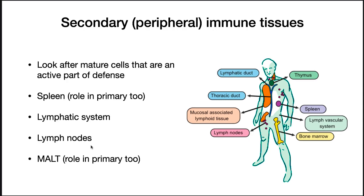There are also secondary or peripheral immune tissues, which look after mature cells that are an active part of defense. These include the spleen — which also has a role in primary defense — the lymphatic system, lymph nodes, and the mucosal-associated lymphoid tissue, or MALT.